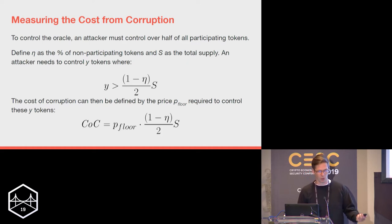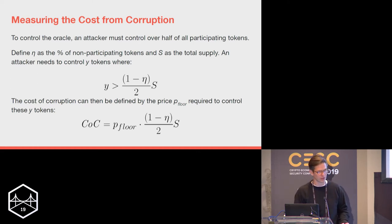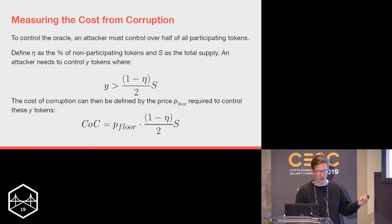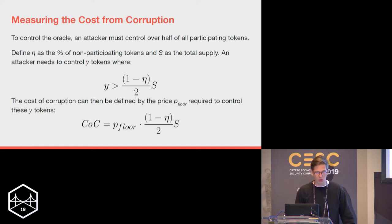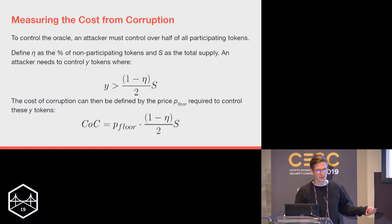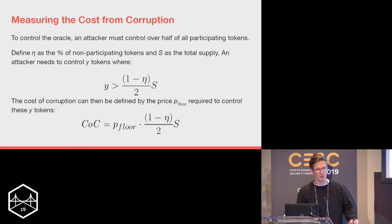To measure our Cost of Corruption: this is a voting system with tradable voting rights. To control the oracle, an attacker simply needs to control half of the participating voting tokens. At 100% voter participation, that means controlling 51% of voting tokens. We have a parameter eta that measures the percentage of non-participating tokens and adjusts accordingly. Our Cost of Corruption is then simply the cost to buy that number of tokens — and we use a freely tradable market to reveal what that cost is.